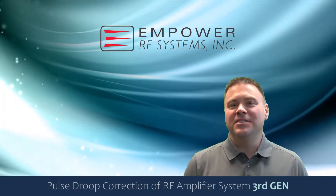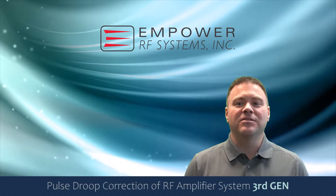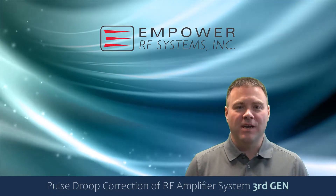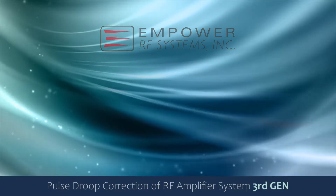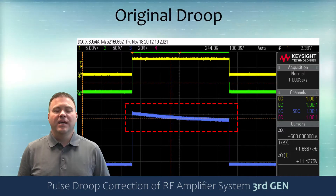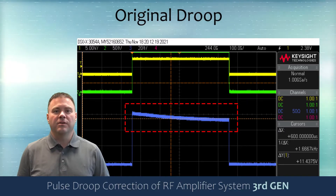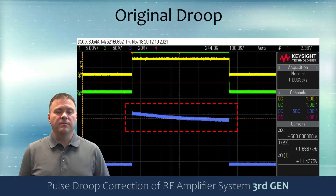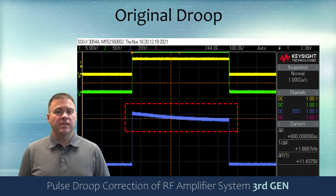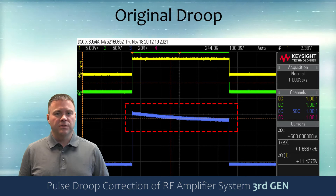Hello, my name is Darren Miles. Today I'm here to talk to you about droop correction on our third generation RF amplifiers. Here we see the natural effect of the output of the third generation amplifier. Note the droop that is highlighted in red — the leading edge of the pulse has a greater amplitude than that of the falling edge.